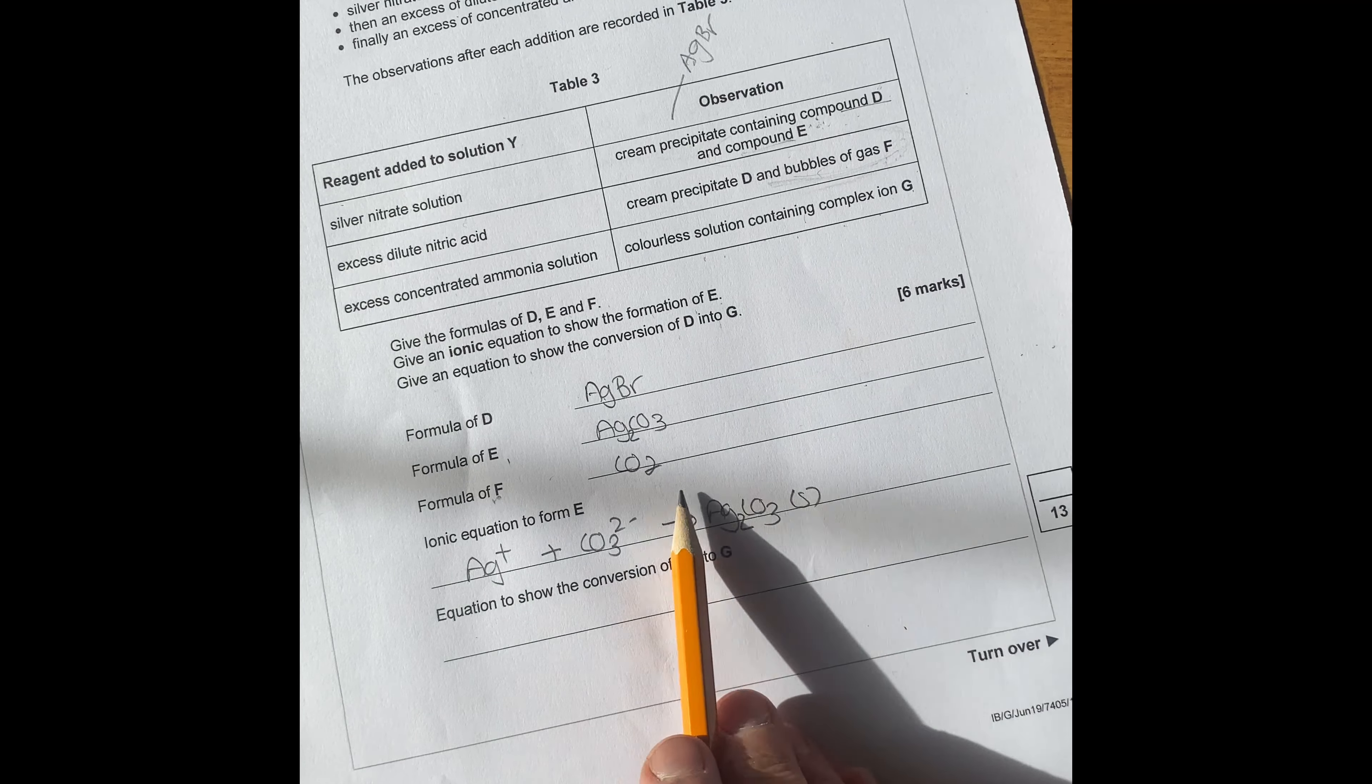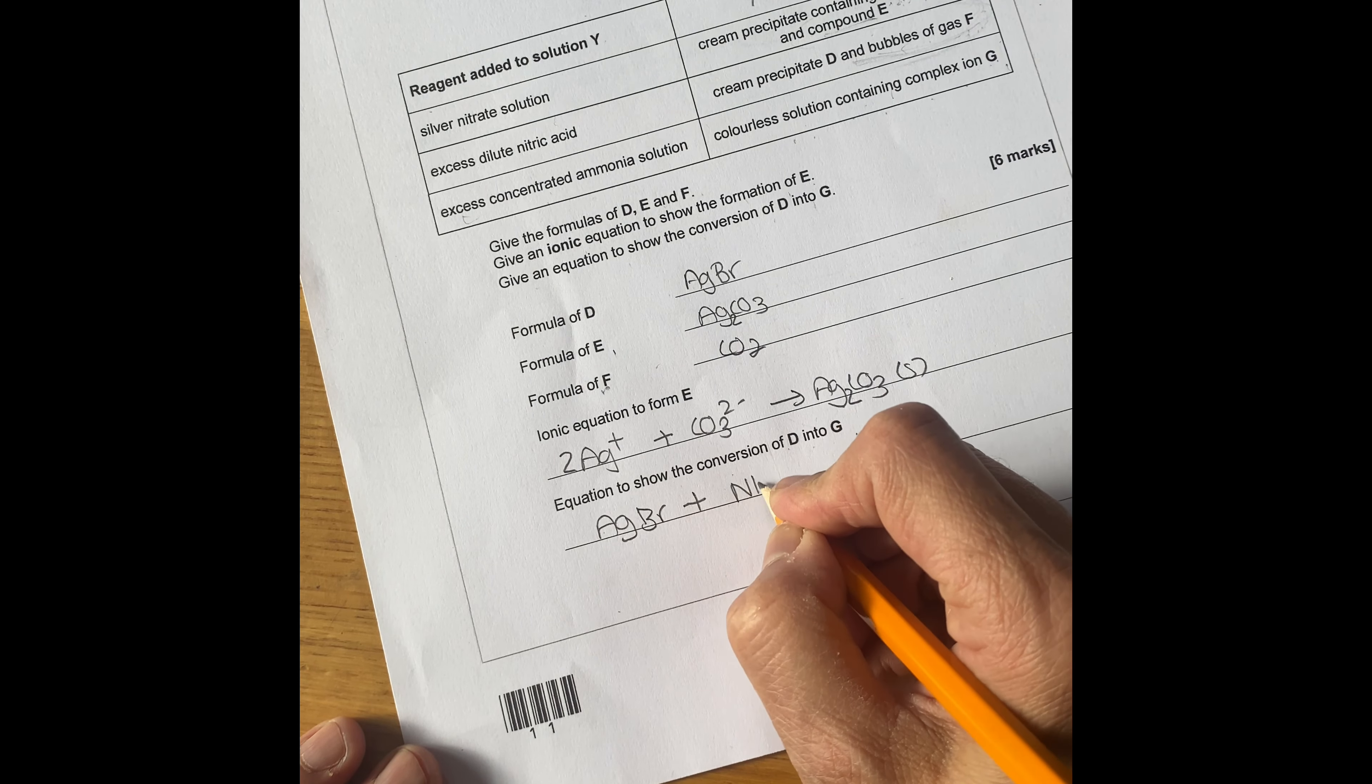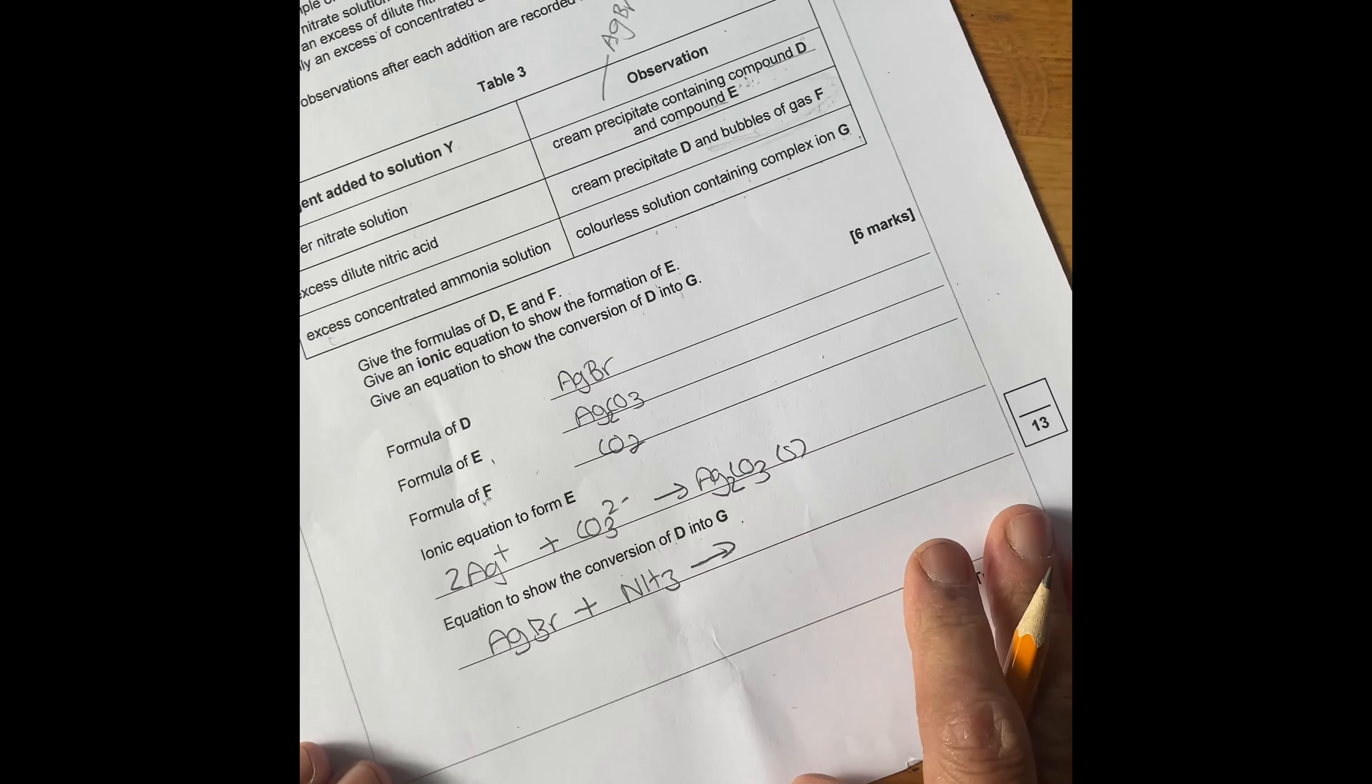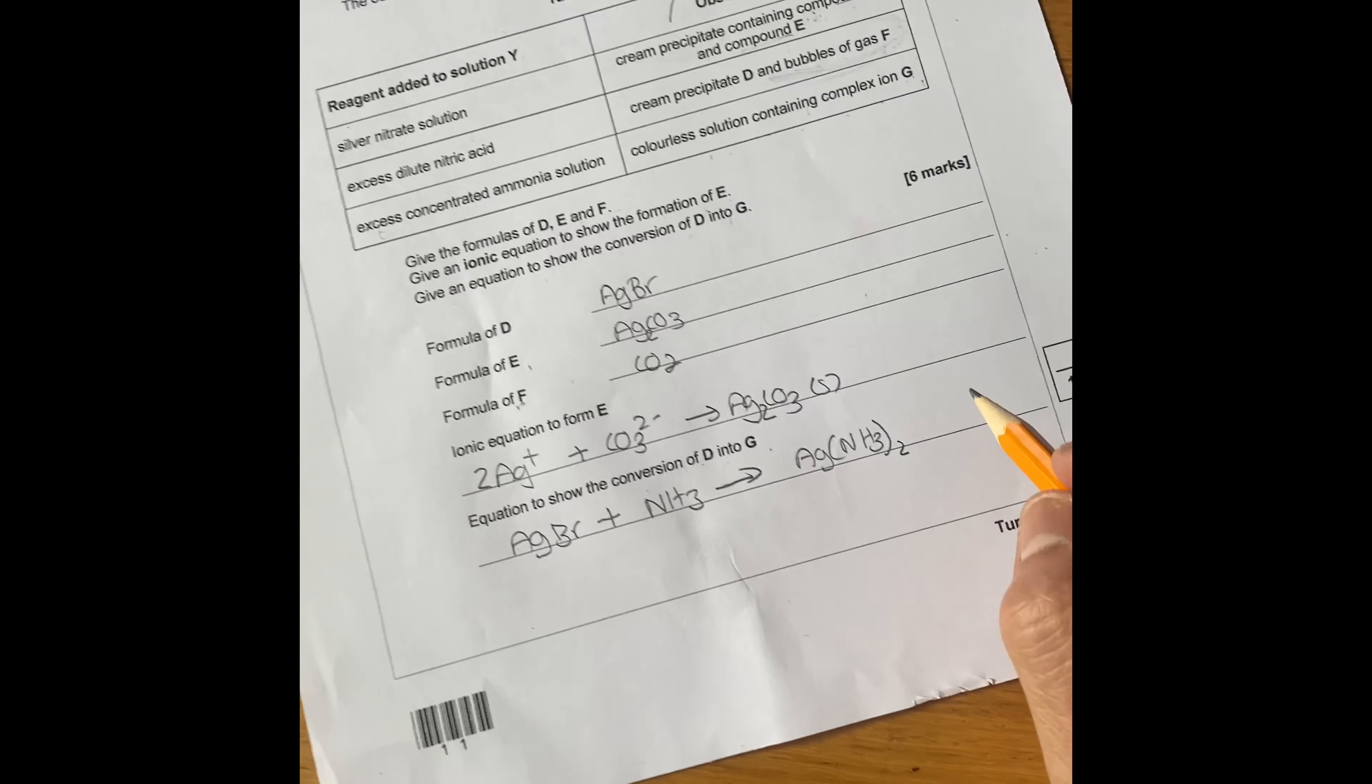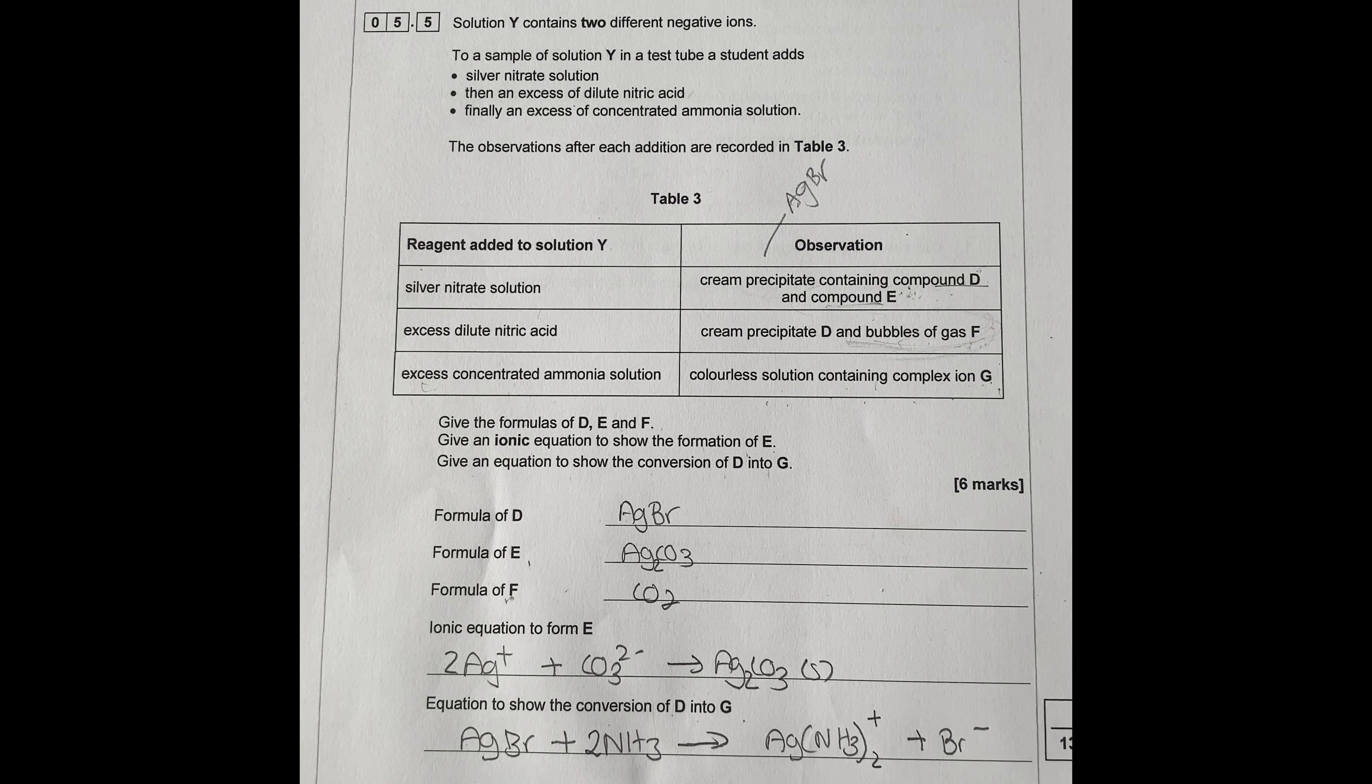Equation to show the conversion of D into G. Colorless solution containing complex ion G. Right, this is a complex ion, so what you have is silver bromide, that is your cream precipitate, plus your excess concentrated ammonia. Then you end up with your complex ion that you know, which is Ag(NH3)2 plus, because this makes a straight linear molecule, and then you end up with your Br minus coming out. Then you've got to balance this equation.